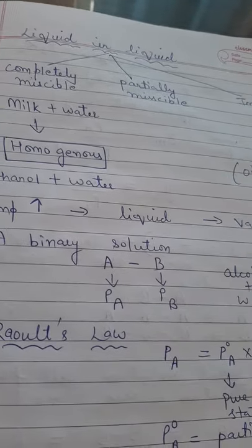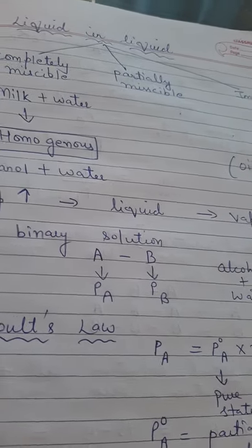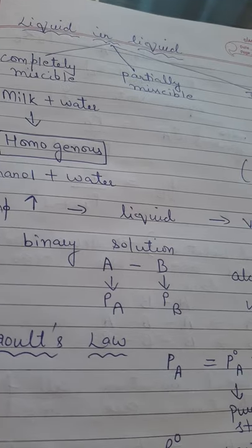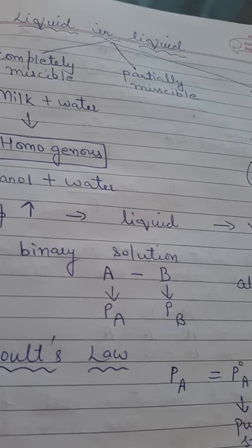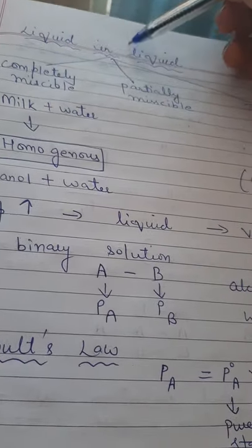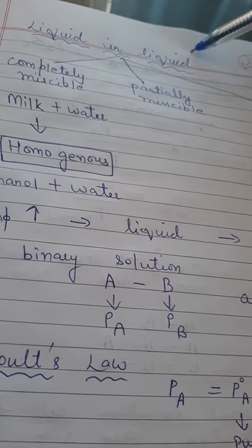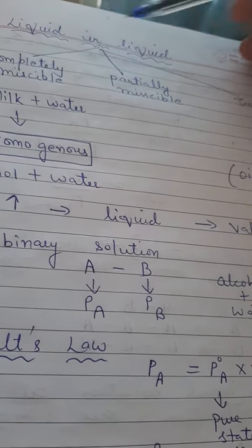Hello kids, today I am starting Raoult's law. We have already discussed two types of solutions. Now the third type, third category, is liquid in liquid. There are three categories if we mix two liquids with each other: maybe they are completely miscible, maybe they are partially miscible, or they may be immiscible.